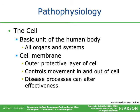The cell is the basic unit of the human body — all organs and systems are composed of cells. The cell membrane is the outer protective layer of the cell, kind of like the skin on your body. It protects the internal organelles of the cell and controls movements in and out. Disease processes can alter the effectiveness of the cell membrane.